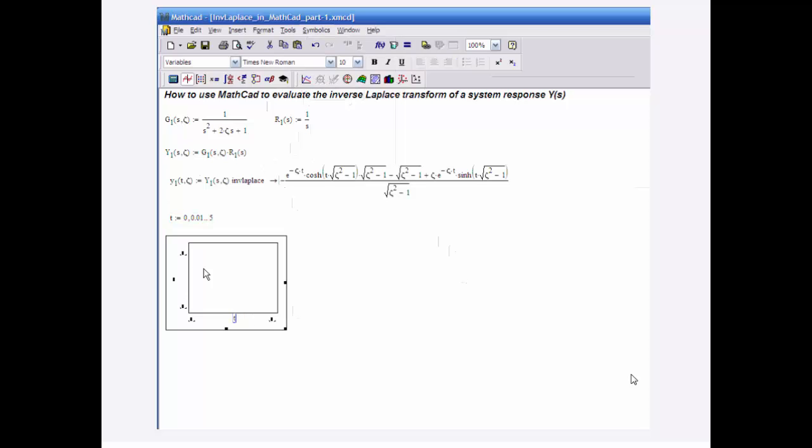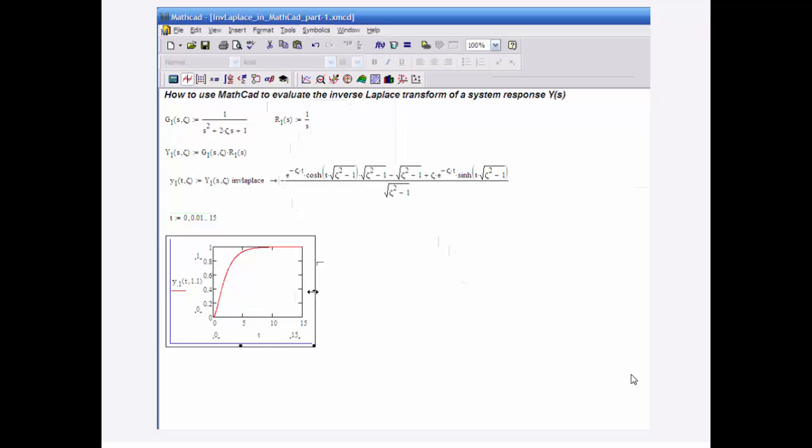Enter a plot. Put in time. Y1 of t, and then let's see, for zeta, let's just say I have 1.1. Well, let's run that a little further then. Let's go to 15. There we go.